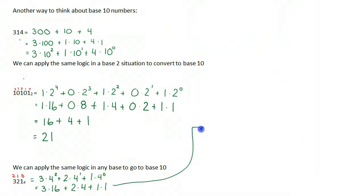Let's just take this over here, shall we? 3 times 16 is 48 plus 8 plus 1. 48 plus 8 is going to give me 56 plus 1 is 57. So 3, 2, 1 in base 4 is 57 in base 10. I hope these examples helped.